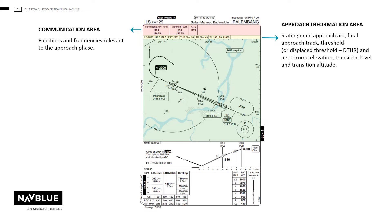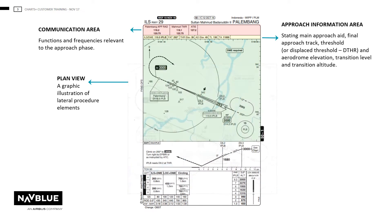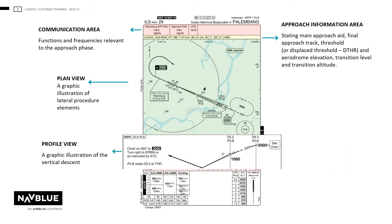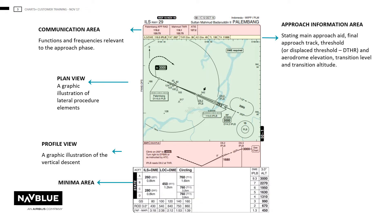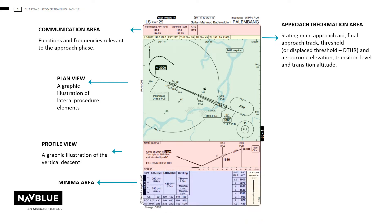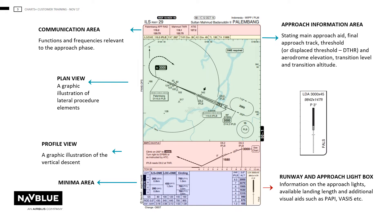The plan view. The profile view with the missed approach text included. The minima section. And the runway and approach lighting box giving information on LDAs, visual aids and approach lighting.